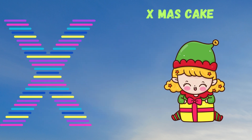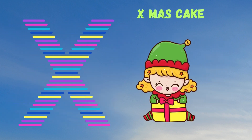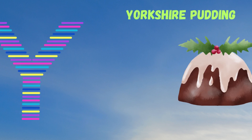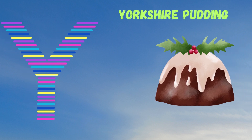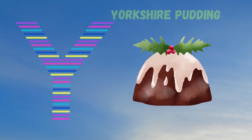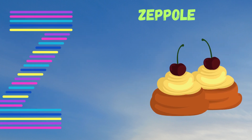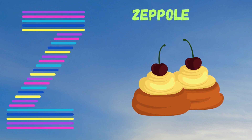X is for Xmas Cake. X, X, Xmas Cake. Y is for Yorkshire Pudding. Y, Y, Yorkshire Pudding. Z is for Zeppole. Z, Z, Zeppole.